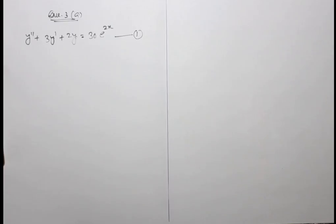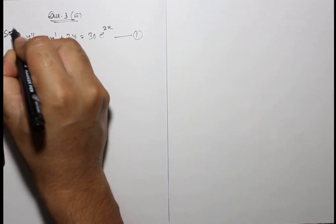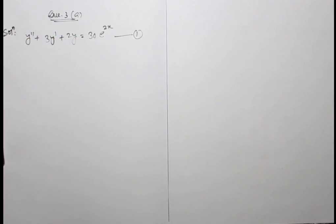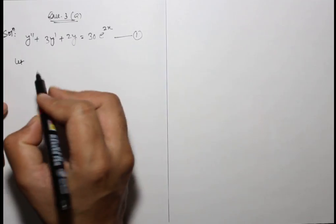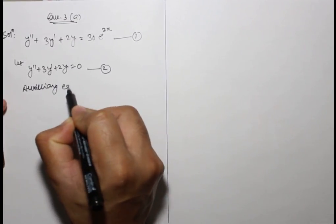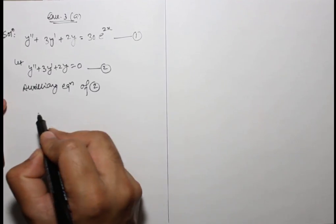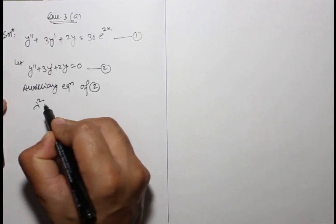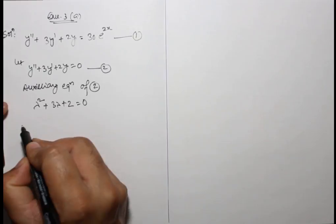This is the given non-homogeneous differential equation. First, we find the complementary function. The auxiliary equation is formed by putting lambda in place of the derivatives. Now we have to find the value of lambda.